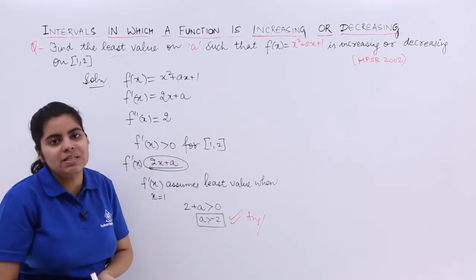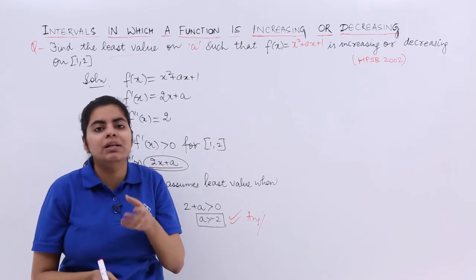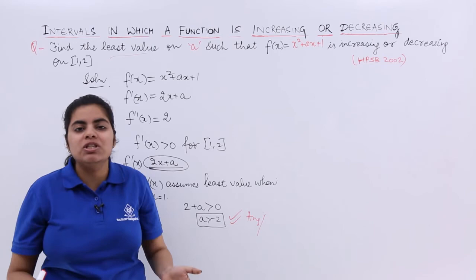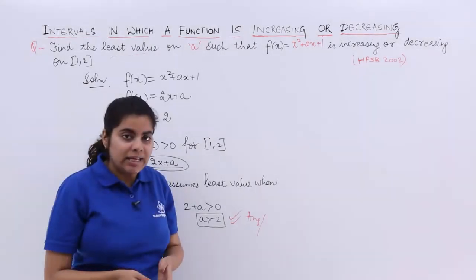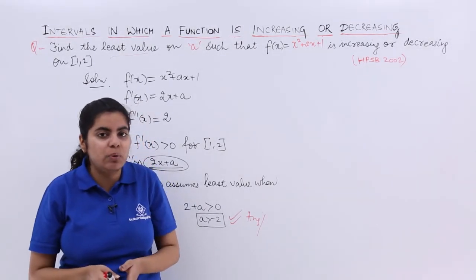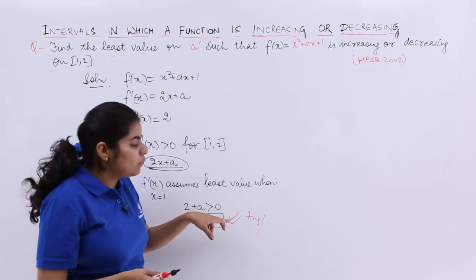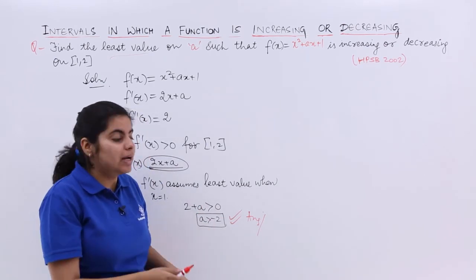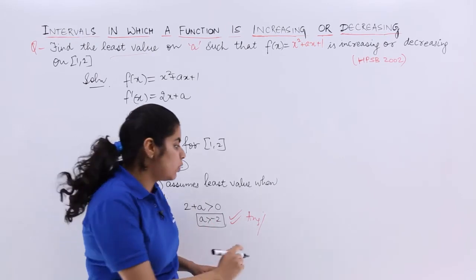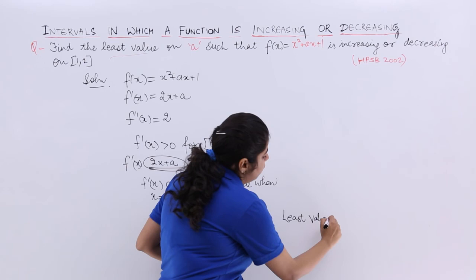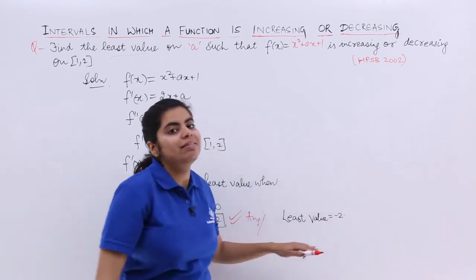This is how we approach these kinds of questions. A simple conceptual question—if you know the basics of the concept, you can solve any kind of question. So what is the least value? You're not just saying a should be greater than -2. The actual least value of a is -2, and that is the answer.